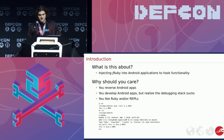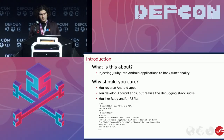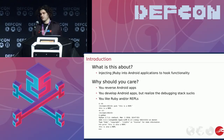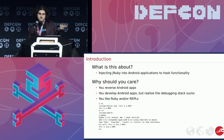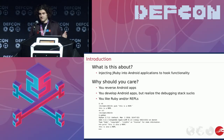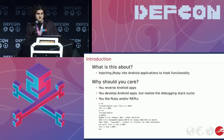Getting back to what is this talk about and why does it matter? This talk is about injecting JRuby into Android applications to do function hooking. This might be useful to you if you reverse Android apps or if you develop them — it's just another debugging tool, honestly. Or if you have some strange fascination with Ruby and/or REPLs.